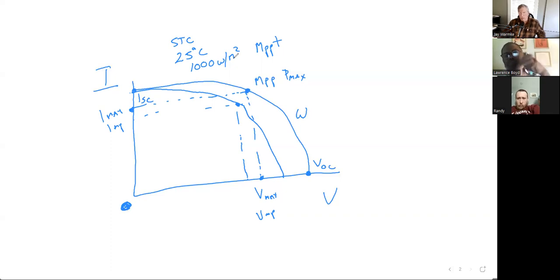Those are the five points on the curve you need to be aware of: ISC, IMP, VOC, VMP, and the maximum power point. The solar panel manufacturer will give you those numbers. Now about the MPPT charge controller - it's really a DC to DC voltage converter. Power can come into the charge controller at one voltage and is converted to a different voltage when it leaves.